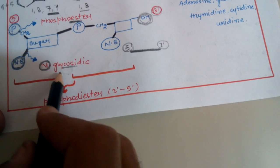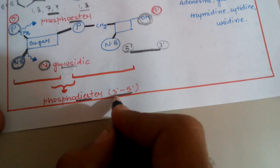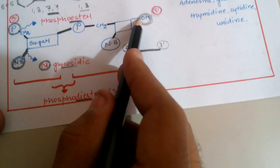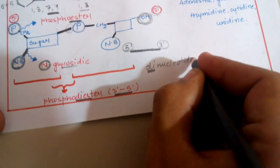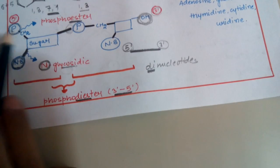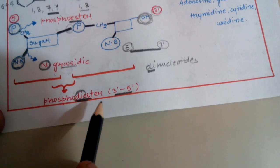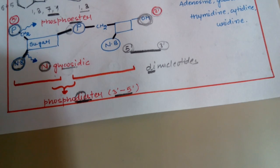One nucleotide interacts with another nucleotide by a phosphodiester bond, formed between the 3-prime and 5-prime ends. The free OH at the 3-prime position interacts with the phosphate of the next nucleotide, forming a dinucleotide. Continuing this process forms trinucleotide, tetranucleotide, and eventually a nucleotidic chain — known as nucleic acid — because nucleotides polymerize to form nucleic acid.